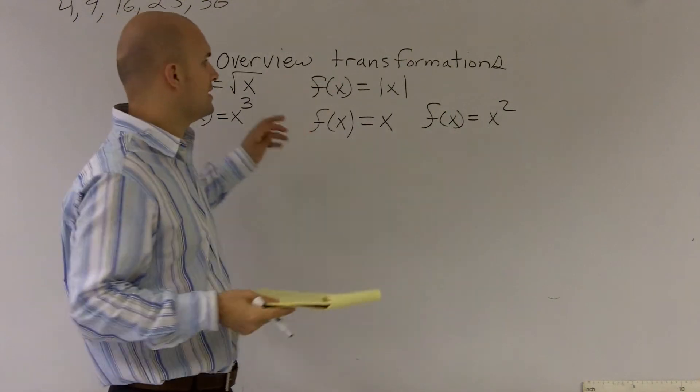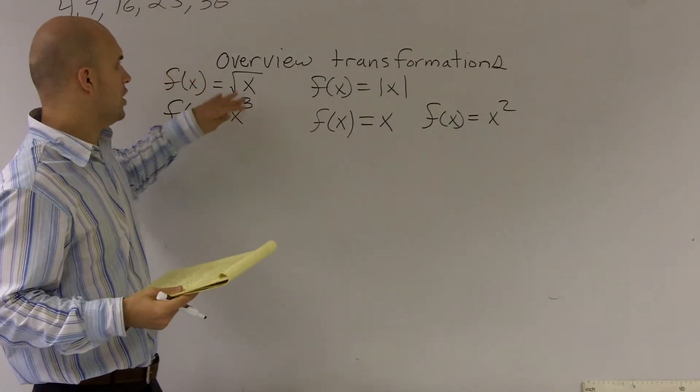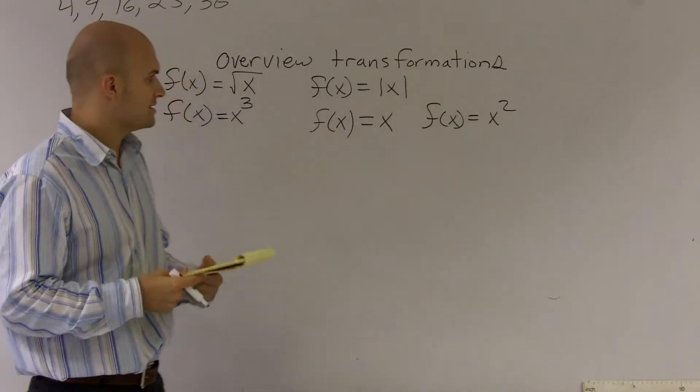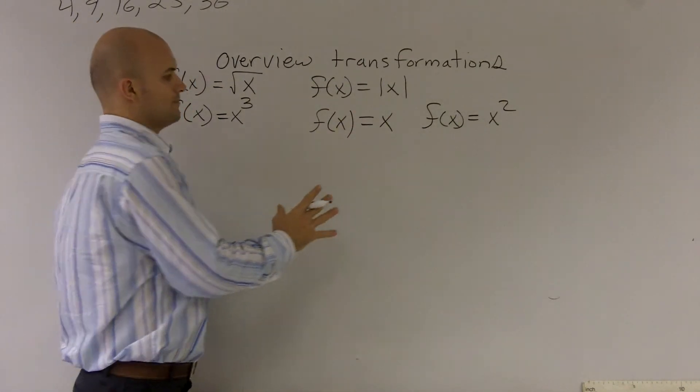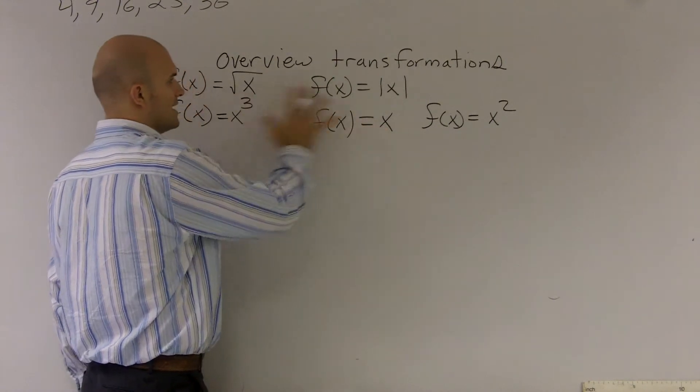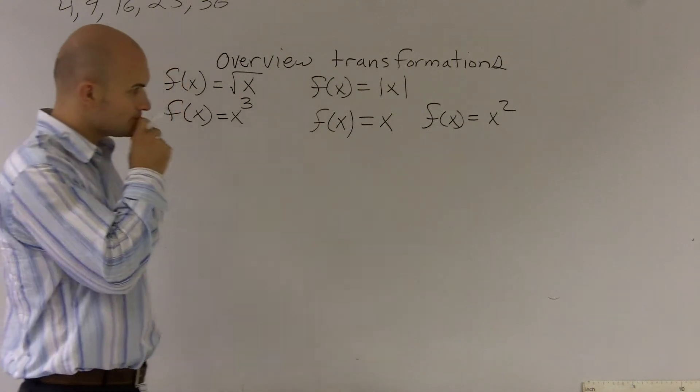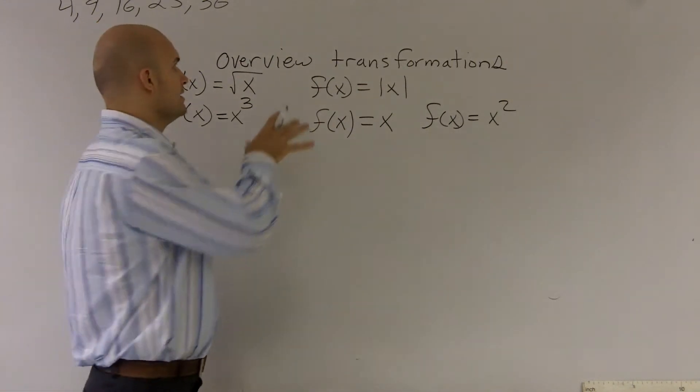A lot of times what we've talked about in the previous chapter is all these functions have what we call a parent graph. They all have a similar graph without anything changing, just what's happening to the x, we can draw a graph.